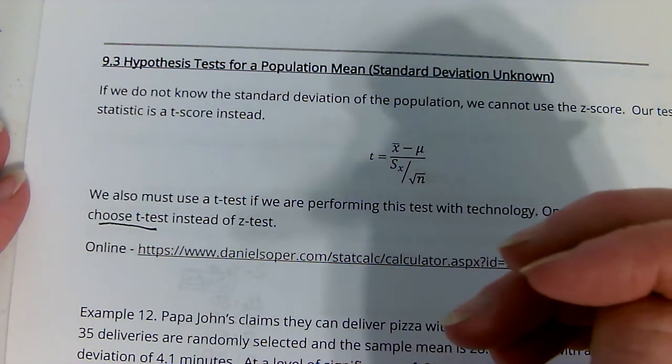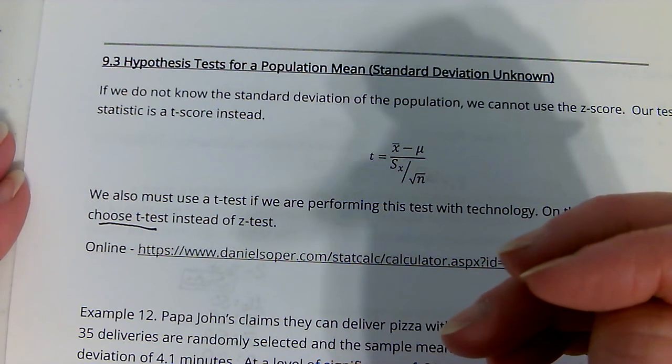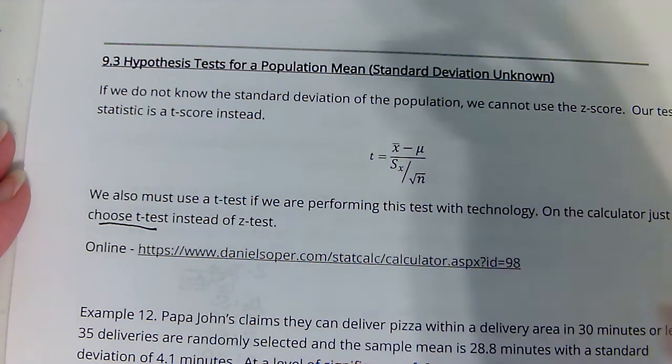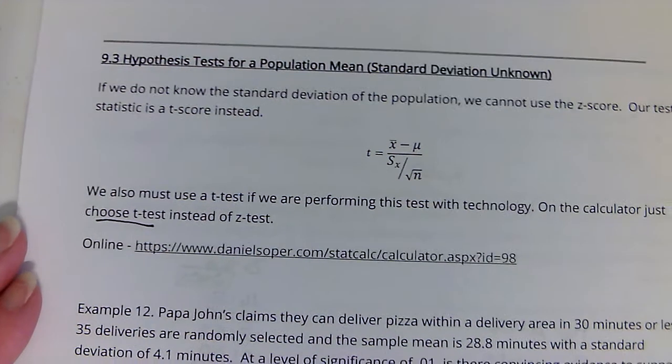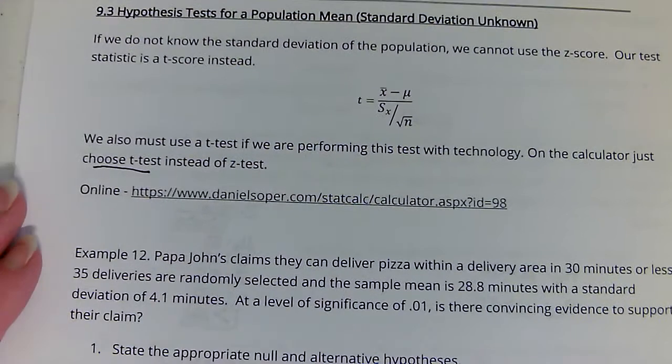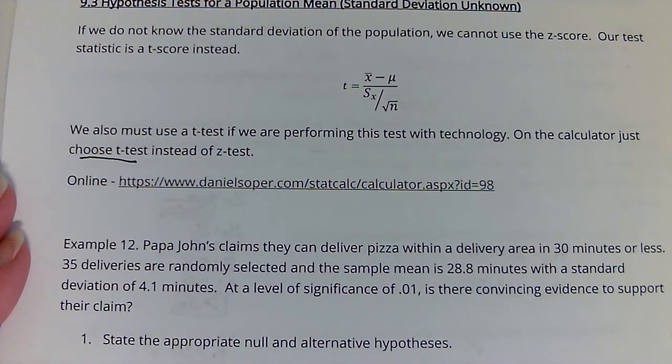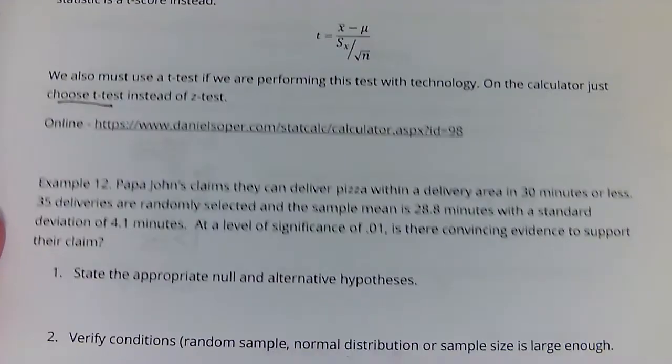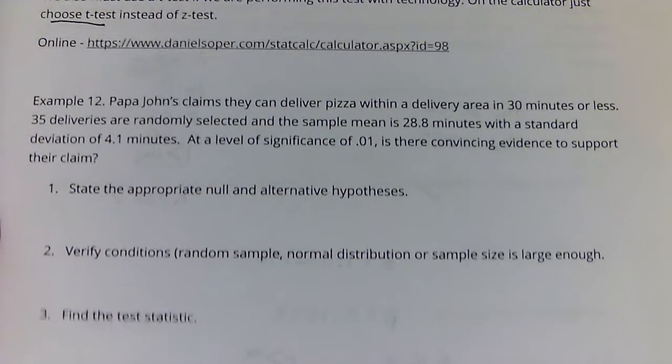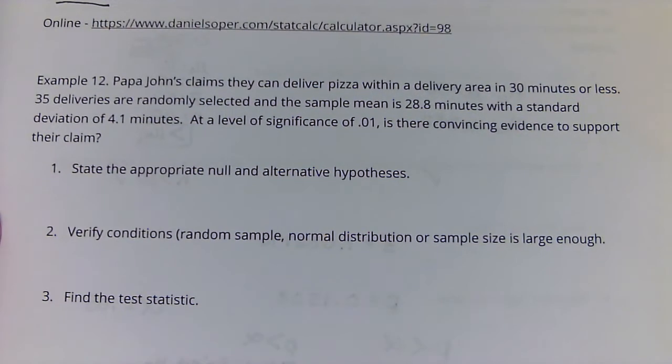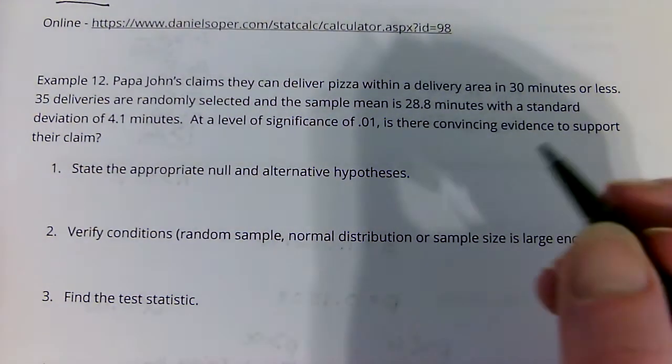I also posted an online calculator. If you do not have a TI, you can use that and choose the one that's t-test if you do not know the standard deviation of the population. So, I've got one example here, because it really isn't any different than 9.2.